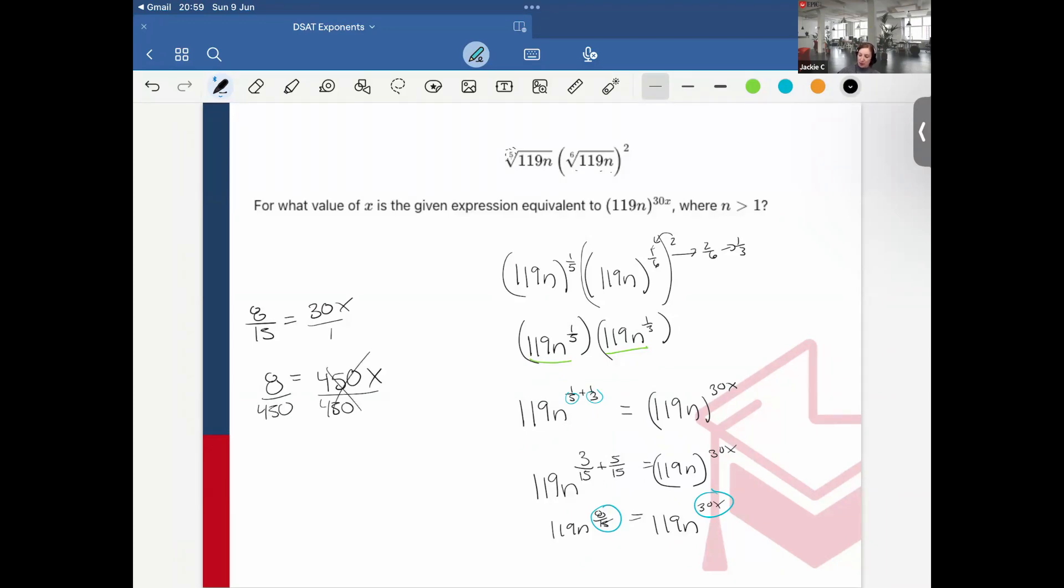Now divide each side by 450. And then this will reduce to cut it in half. So I'm going to get 4 over 225 is equal to x. And that would be the value of x, 4 over 225.